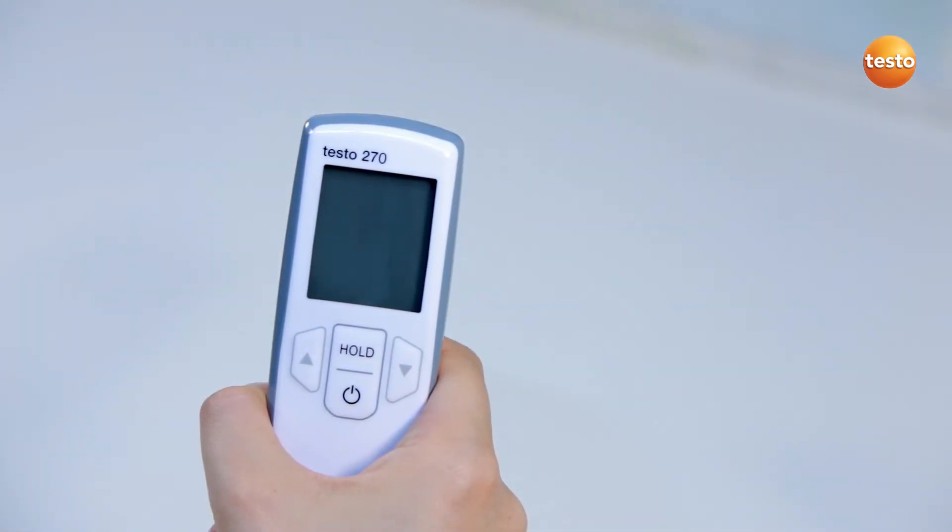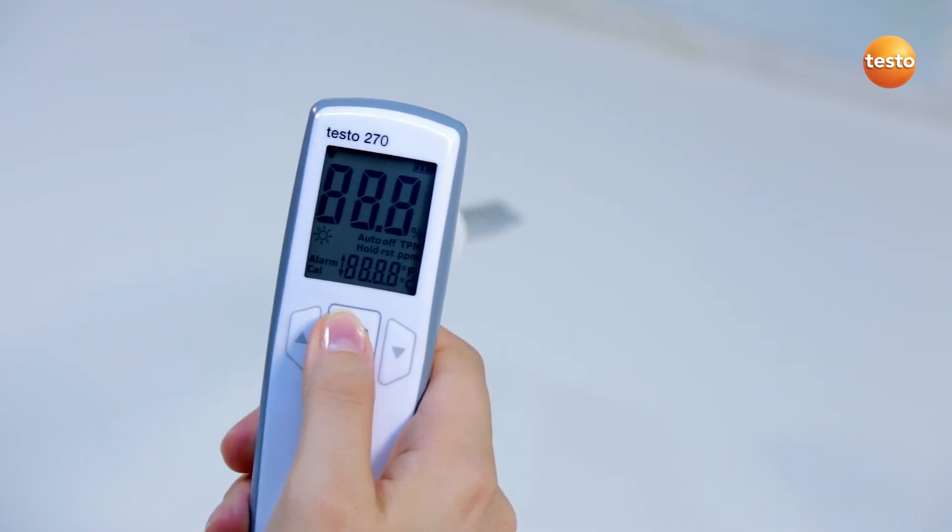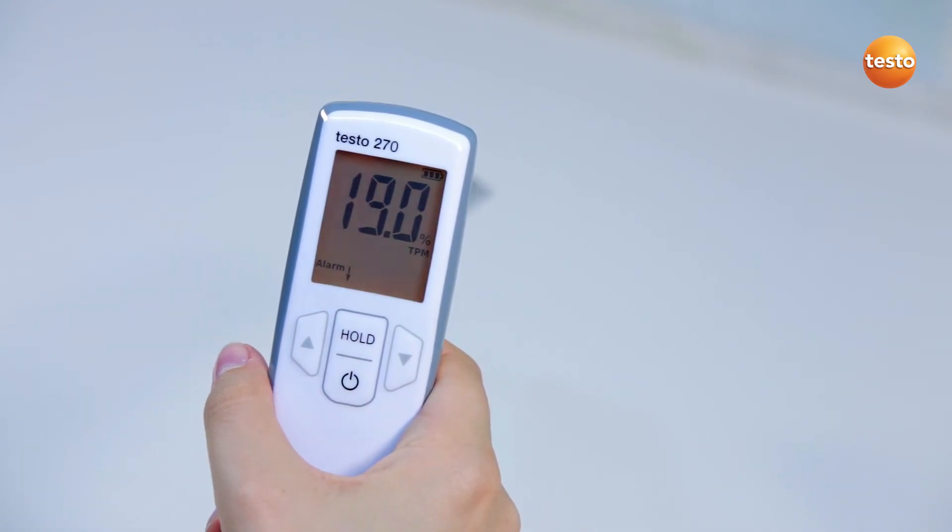In order to configure the Testo 270, I switch it on and immediately press the hold button for 2 seconds to access the configuration menu.